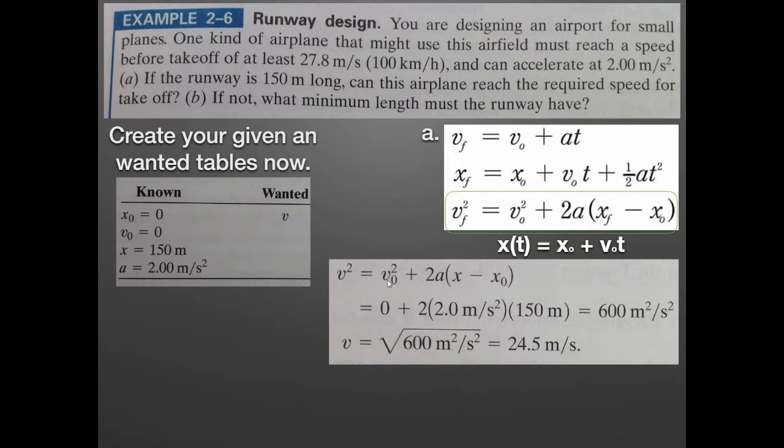Our goal is to solve for the final V. Luckily it's already isolated. All we have to do is square root the other side to get the values. Let me show you how things can get messy when you plug in values before you finish solving. I always solve for the quantity first in variable format before I plug things in to reduce complications. When we plug things in, we get V squared equals V0 squared plus 2A times X minus X0. Which gives us 600 meters squared per second squared. And we take the square root, we get 24.5 meters per second. This is not our answer. Our question was yes or no. Can this plane reach the required speed for takeoff? It can reach 24.5 meters per second but requires 27.8 meters per second. So no, it cannot take off from this runway.